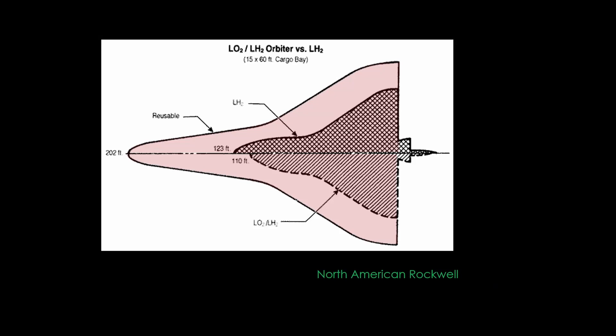NASA had wrestled with the size issue during the initial design of the orbiter. This is a drawing from North American Rockwell that shows that the shuttle would be 62 meters long if it carried all of its propellant internally.